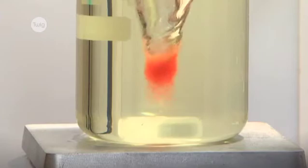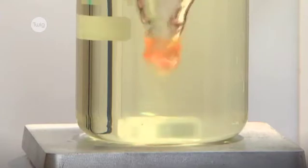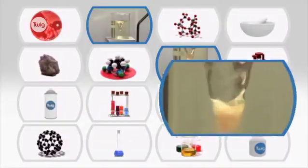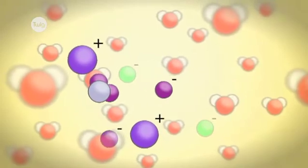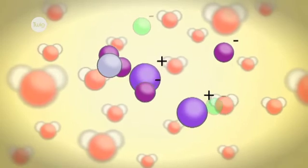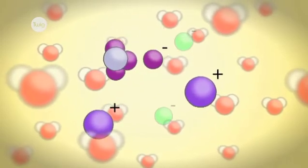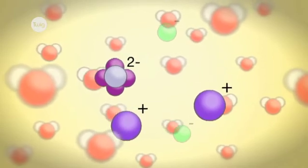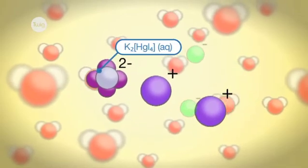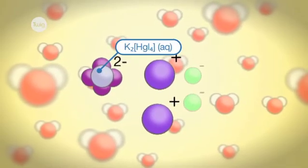We can see the mercury iodide forming as it precipitates out of solution. With potassium and iodide ions left in the solution, another reaction now occurs. These excess ions react with the mercury iodide precipitate to produce yet another compound: potassium tetraiodamercurate. This new compound is colourless and soluble, and so the orange tornado vanishes almost as soon as it forms.